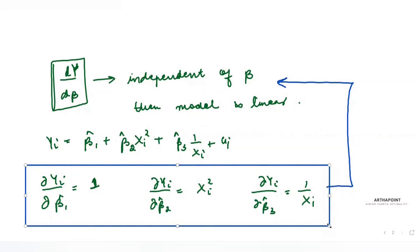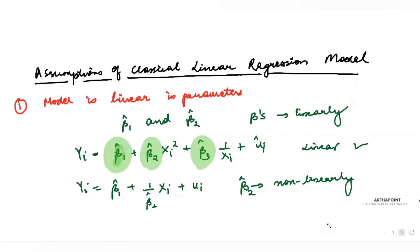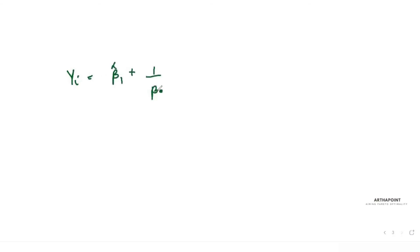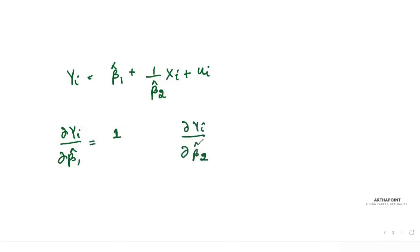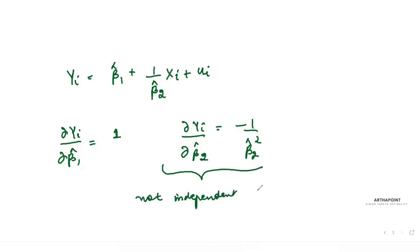Now let's look at another model: yi = β1 hat + (1/β2 hat)·xi + ui. Differentiating with respect to β1 hat gives 1 — that's fine. When we differentiate with respect to β2 hat, we get −1/β2 hat². Here, the differentiation is not independent of β. Therefore, this model is a non-linear model.